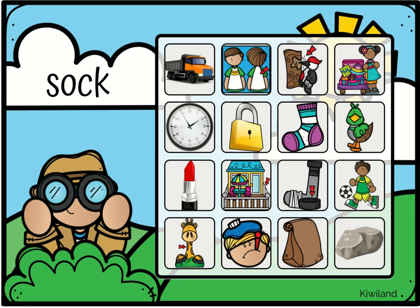Let's look at our first example here. I have my O vowel. A short O makes an AH, AH sound. So when I sound out the word, I have S, AH, K — sock.